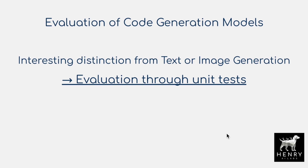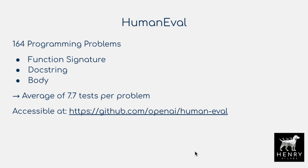Once we've trained these autoregressive text generation models, we need some way of evaluating them. It's hard to evaluate text or image generation models — say a chatbot that writes a story or poem. With code generation, you have unit tests, and that's a really interesting and exciting component. The authors manually construct the HumanEval dataset, linked on GitHub, with 164 programming problems each having a function signature, docstring, ground truth implementation, and an average of 7.7 test cases per problem.